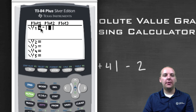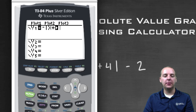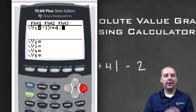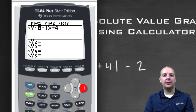So we'll have negative absolute value of, and then we finish the rest of the function out: absolute value of x plus four, then right arrow to get out of the absolute value bars, minus two.